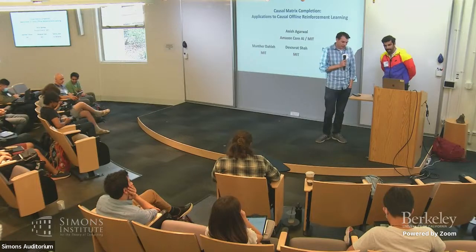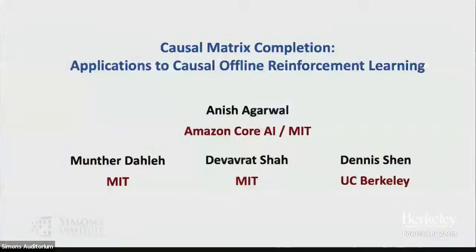He has a PhD from EECS at MIT. He's currently a postdoc at Amazon, and he'll be starting as assistant professor at Columbia in the IEOR department soon. He's an expert in causal inference and counterfactual decision making with observational data. Today he's going to be talking about some tricky issues with matrix completion and the entries are half confounders.